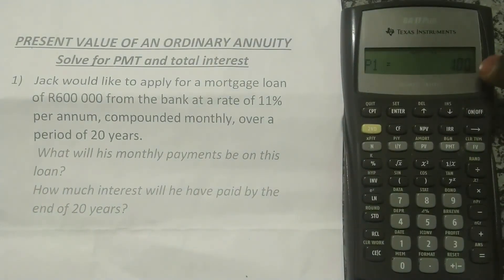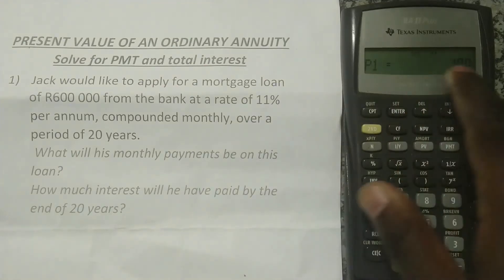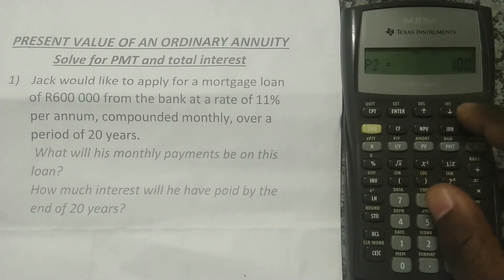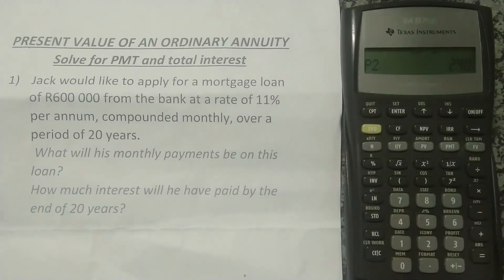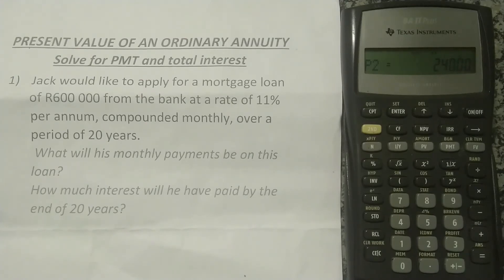Keep in mind that period one is not year one — it's month one. Over 20 years that's 240 months. So I set P1 to 1. Then I press the down arrow to see P2 and enter 240, then press Enter. This tells the calculator I want to see the full loan from month 1 all the way to month 240 — the entire 20-year lifetime.